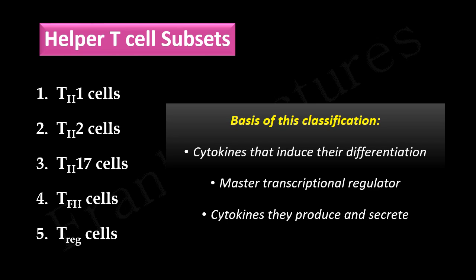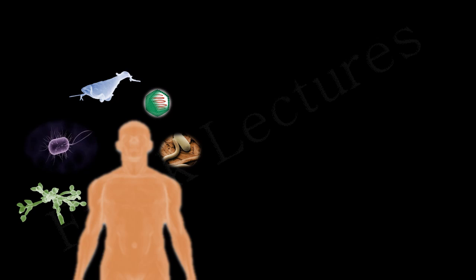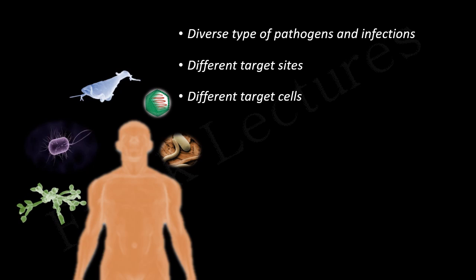Before moving further, let us answer this question: why such diverse types of helper T cells are needed by our immune system? Our body encounters diverse types of infections and infectious agents or pathogens. These pathogens vary according to the sites in the body that they invade and the cells that they target.